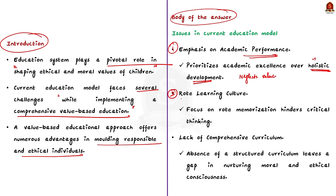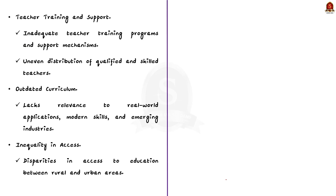The second issue is the rote learning culture. The prevalent focus on rote learning and memorisation rather than practical application hinders critical thinking, creativity, and moral reasoning among students. The third issue is the lack of a comprehensive curriculum — the absence of a structured curriculum integrating values and ethics leaves a significant gap in nurturing moral consciousness among students. The fourth issue is teacher training and support — inadequate training programs fail to equip educators with necessary skills to impart value-based education. India also faces uneven distribution of qualified teachers and a lack of continuous professional development.